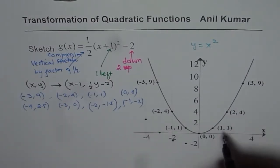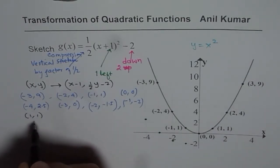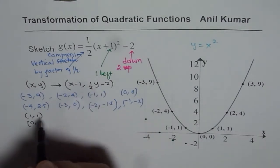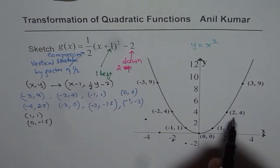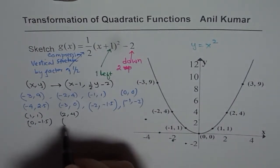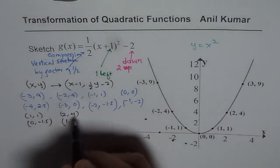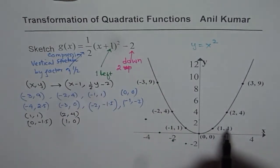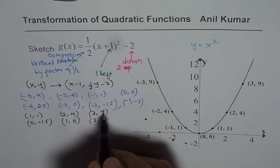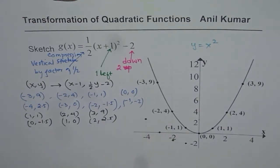Let me now write down the other set of points, which is (1,1). So (1,1) changes to 1-1 is 0, and half of 1 is 0.5, taking away 2 is -1.5. Next point is (2,4). You could actually get these points from the symmetry also. 2 take away 1 is 1. Half of 4 is 2, 2-2 is 0. Then we have (3,9). 1 less than 3 is 2, half of 9 is 4.5, take away 2 is 2.5.